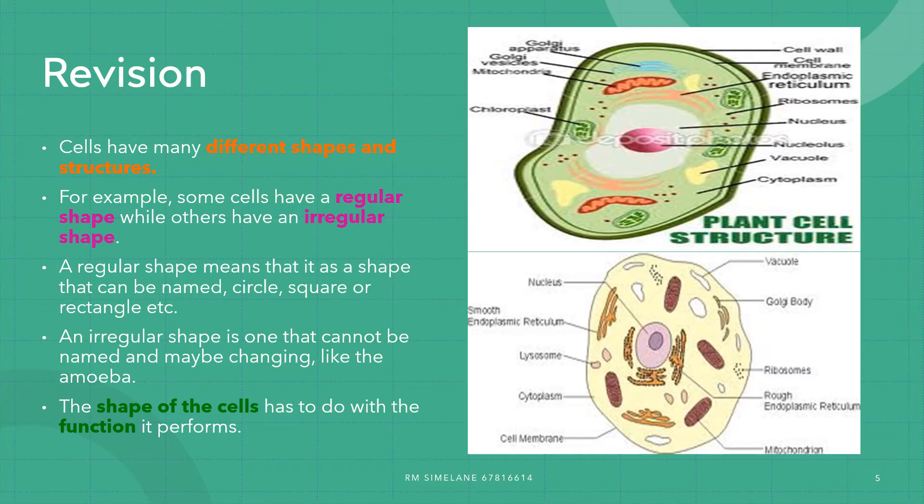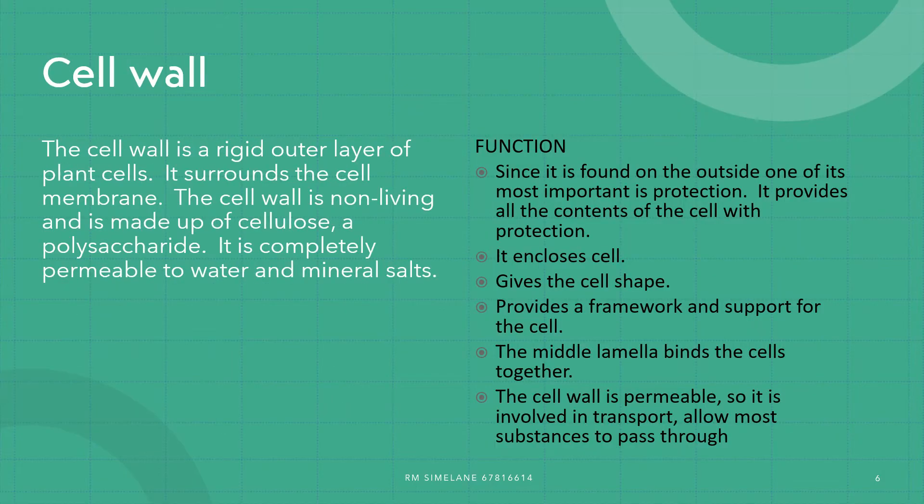So we are done with our revision. We looked at the definition of the cell, the definition of the organelle, what the cell is made of, and the different structures and shapes of both the animal and plant cell. We are now going to discuss the structure, function, and role of the cell wall.